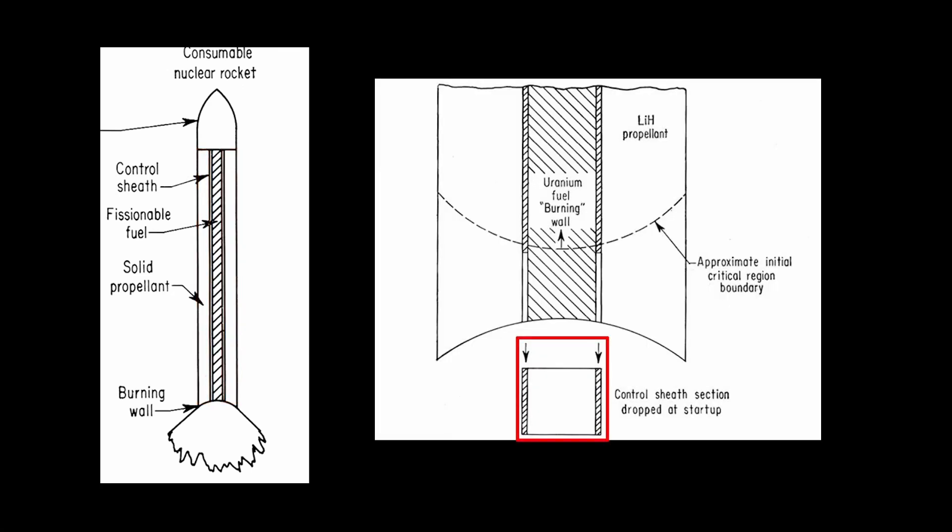On the outside of the rod is the lithium hydride propellant. To start the reaction, you drop off a section of the cadmium control sheath at the bottom, and that allows the bottom section of the uranium rod to start fissioning wildly.